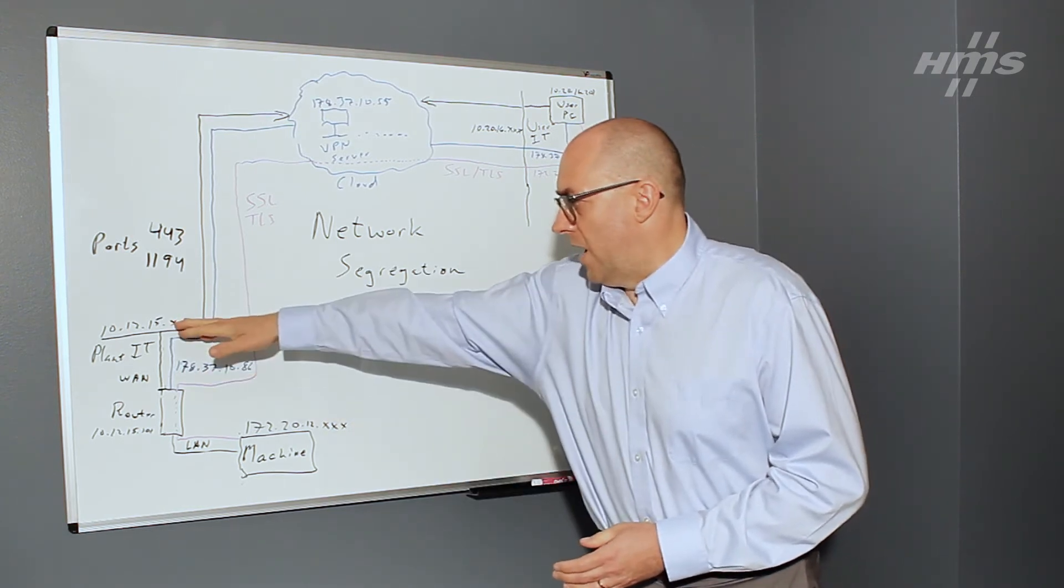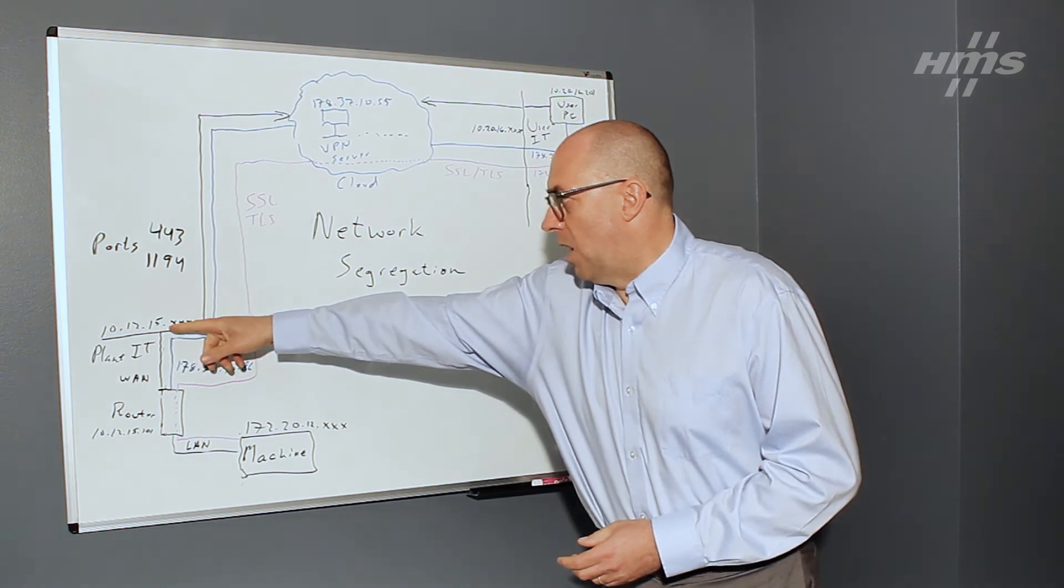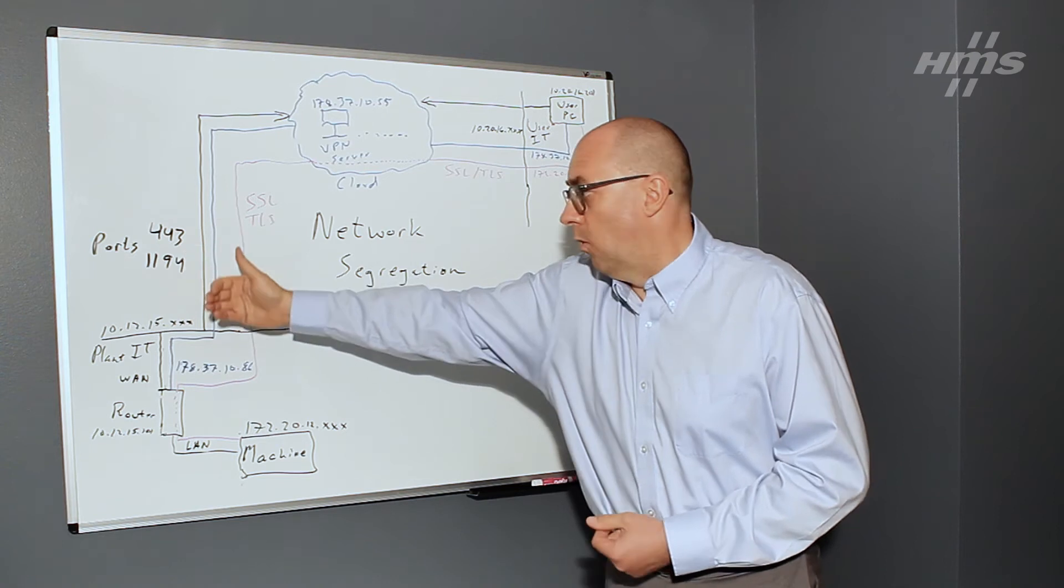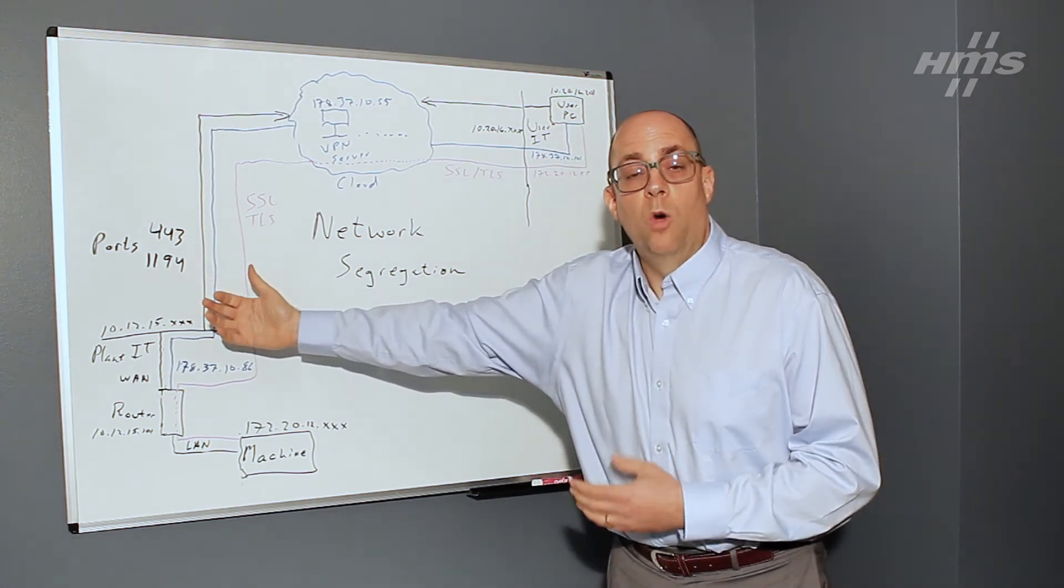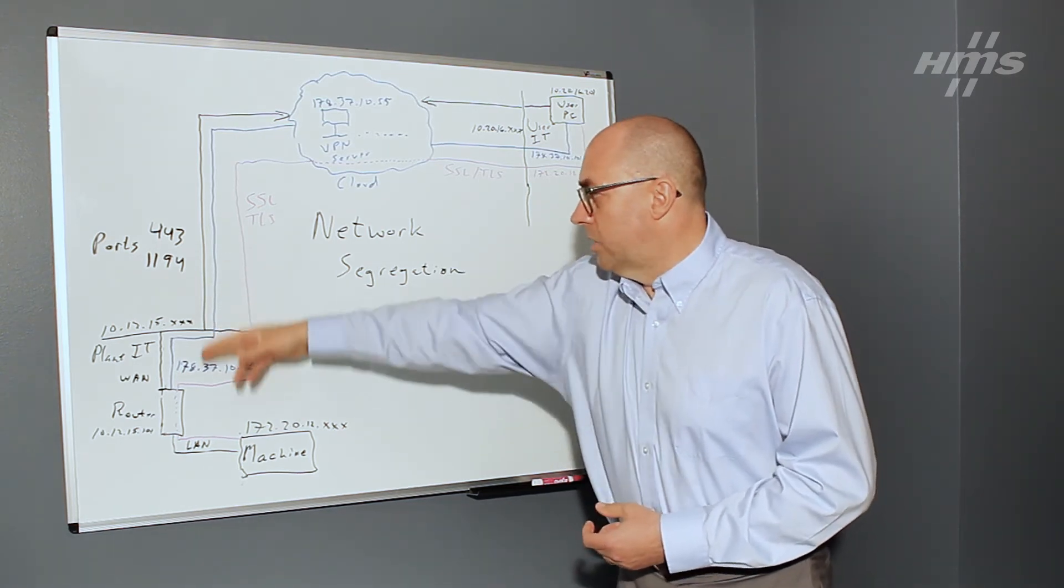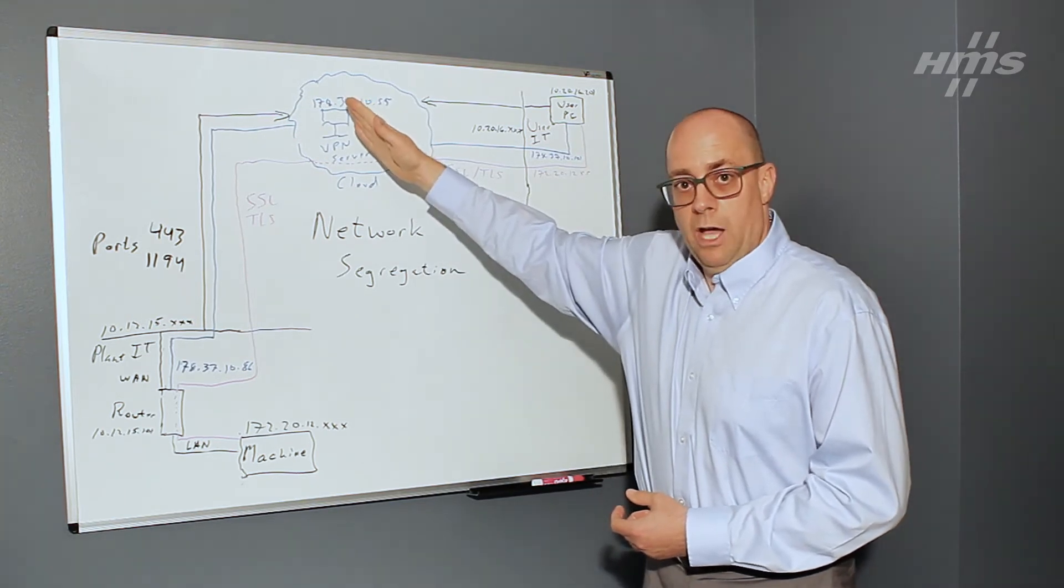Both of these are internet connected environments. So in this case, the router uses an outbound connection typically over ports 443 or 1194. 443 is a secure HTTP port. 1194 is used for, for example, like open VPN type applications there. That's normal port that's used there. So this is connected over completely outbound ports that connect up to the cloud on that site.